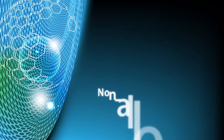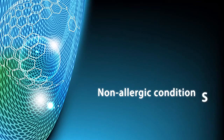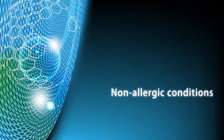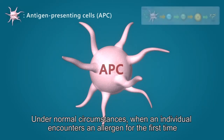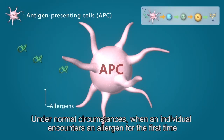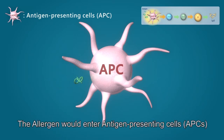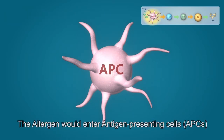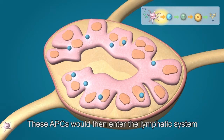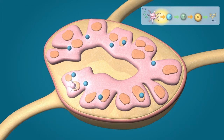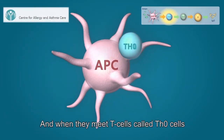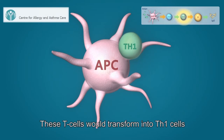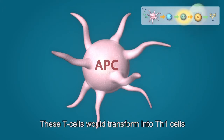Non-allergic reactions. Under normal circumstances, when an individual encounters an allergen for the first time, the allergen would enter the antigen-presenting cells, or APCs. These APCs would then enter the lymphatic system, and when they meet T cells called Th0 cells, these T cells would transform into Th1 cells.